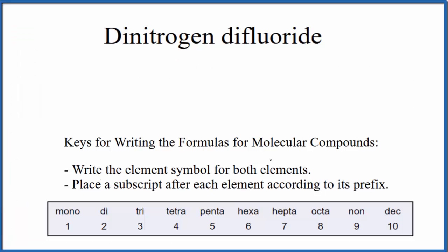First, we'll write the element symbol for both elements. We have nitrogen and then fluoride, which is fluorine. So we'll write N, and then we write F.